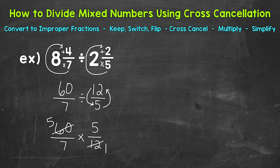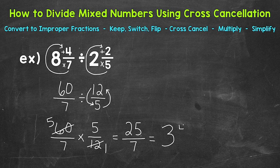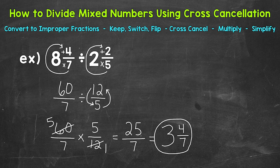Once we cross cancel, we can multiply straight across. 5 times 5 is 25, and 7 times 1 is 7. So we get 25 sevenths. That's an improper fraction, so let's convert it to a mixed number. 25 divided by 7 — how many whole groups of 7 can we pull out of 25? Three whole groups of 7, so that's our whole number. The difference between 25 and 21 is 4, so 4 is our remainder and our numerator, and we keep our denominator of 7 the same. 4 sevenths is already in simplest form, so our final answer is 3 and 4 sevenths.